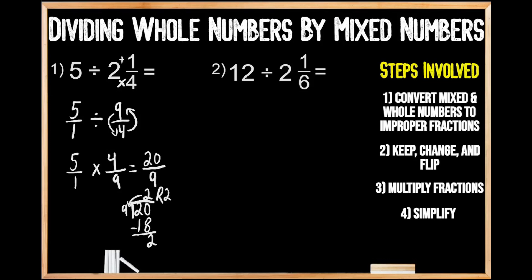Now we're going to write out our mixed number. For the whole number part, we have two whole groups of nine, so we write two. The denominator hasn't changed — it's still in ninths — and the numerator is our remaining two parts from the division process, giving us a numerator of two. So when we divide five by two and one-fourth, we get two and two-ninths.